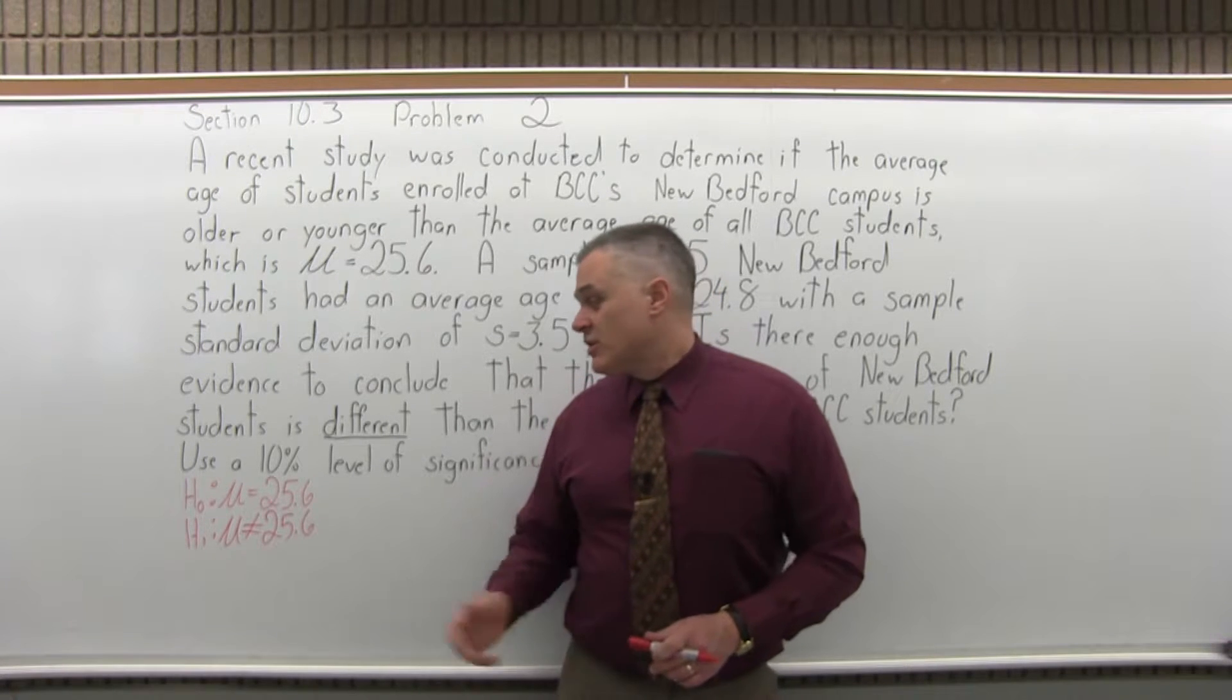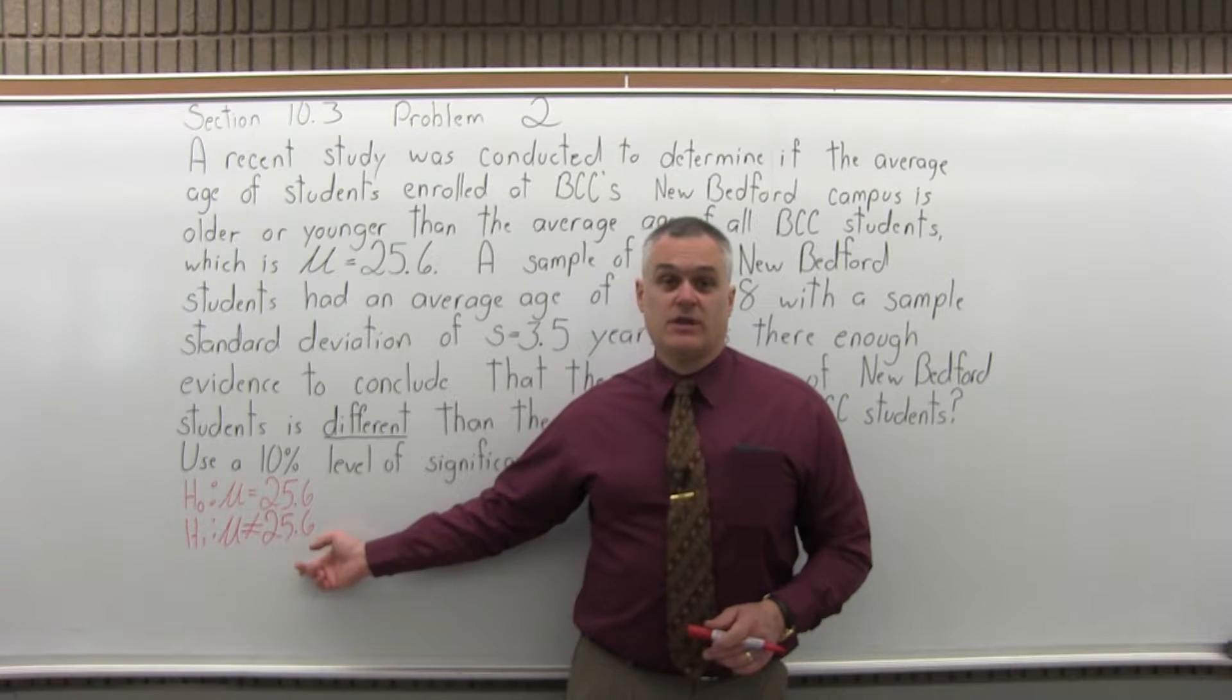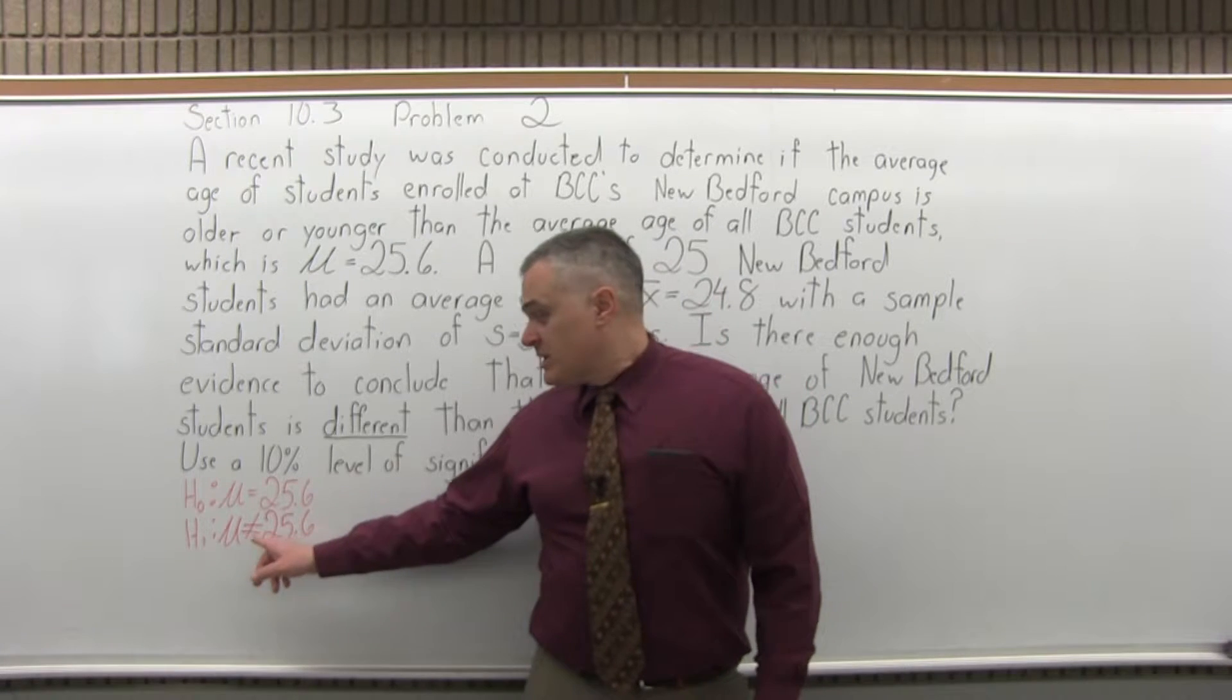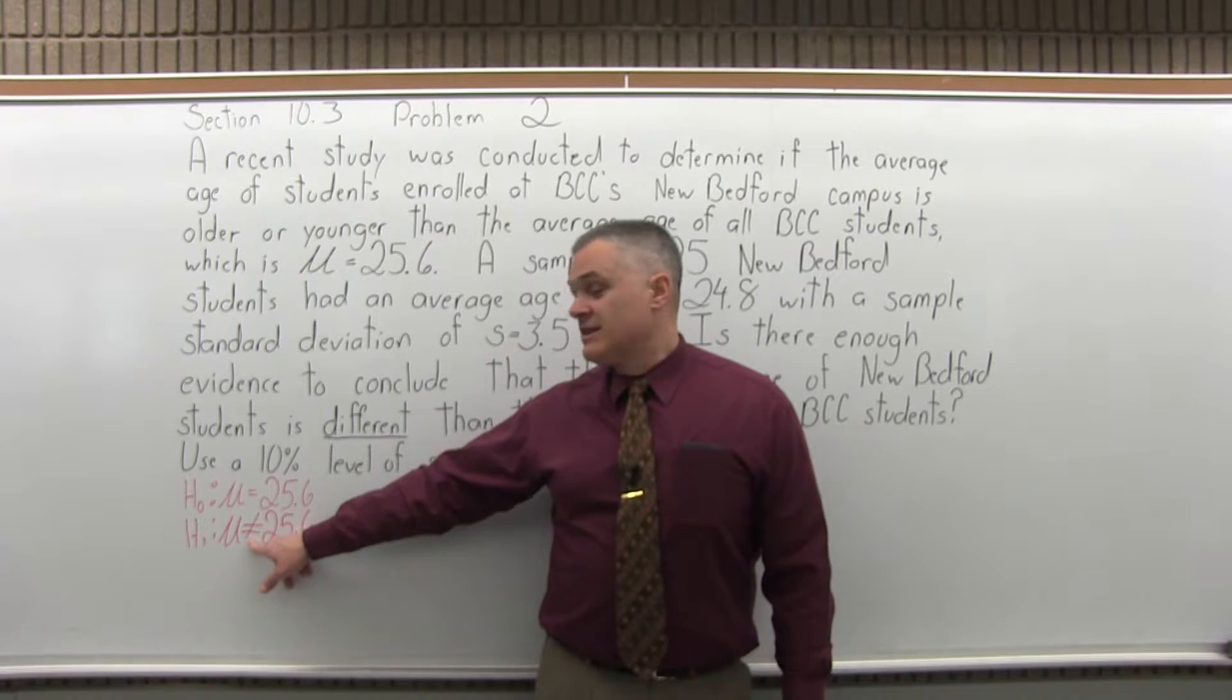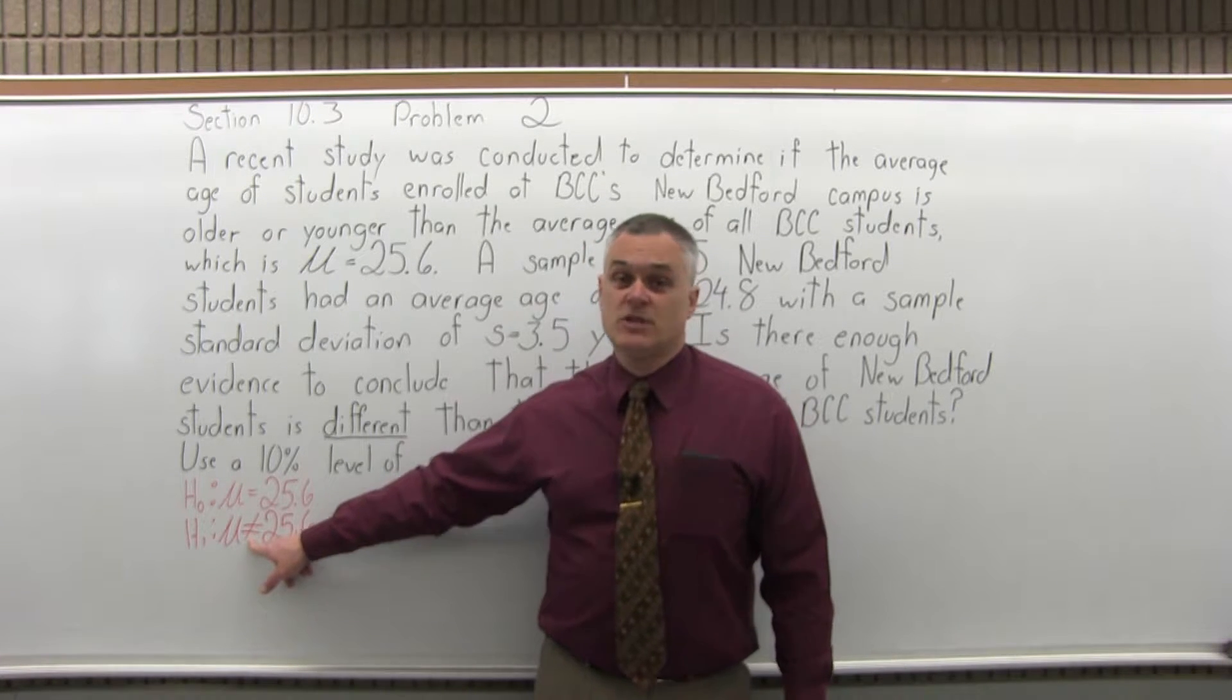So the third step is determine what type of test we have: left tail, right tail, or two-tail. To determine the type of test, you want to look at the inequality symbol in the alternate hypothesis and see which direction it's pointing. That'll tell you what type of test it is. In the case of a not equal to, it's a two-tail test.